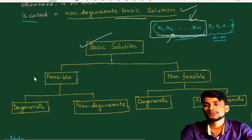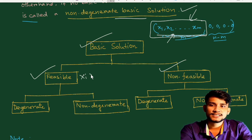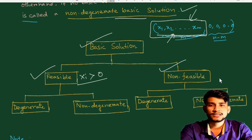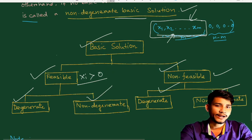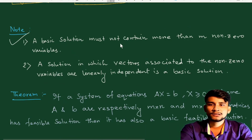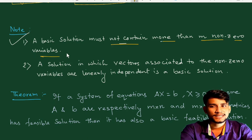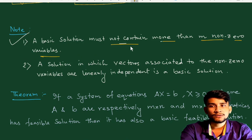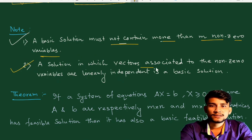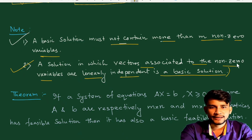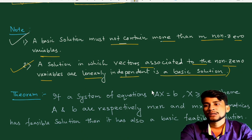In tabular form: a basic solution can be feasible or non-feasible (infeasible). In each case it can further be degenerate or non-degenerate. An important note: a basic solution must not contain more than m non-zero variables, meaning no more than m linearly independent vectors.